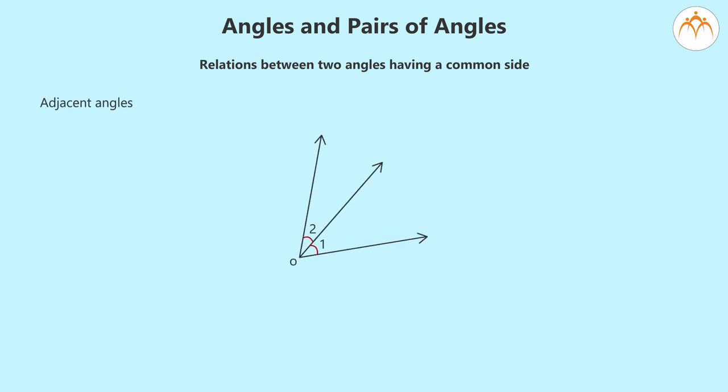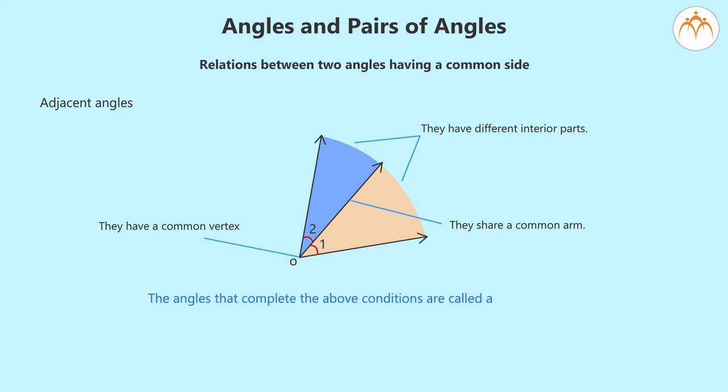One, adjacent angles. They have a common vertex. They share a common arm. They have different interior parts. The angles that complete the above conditions are called adjacent angles.